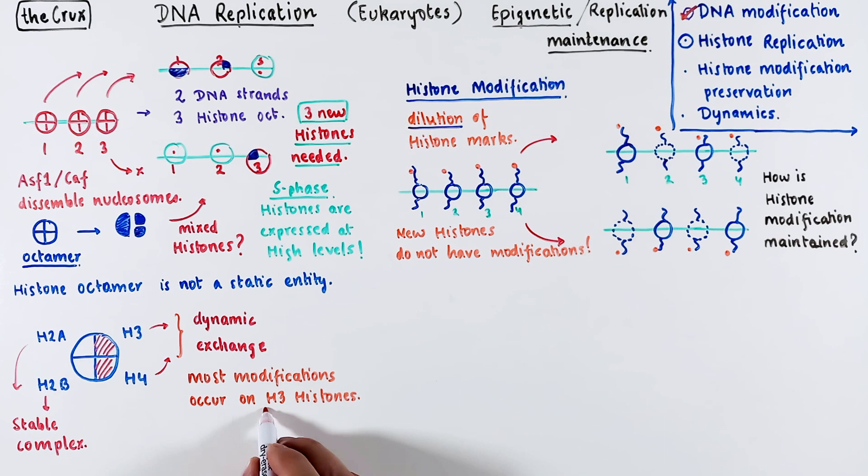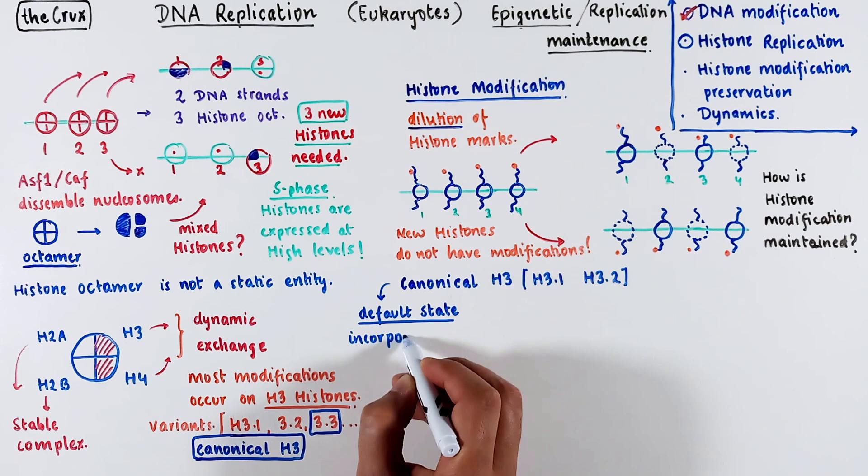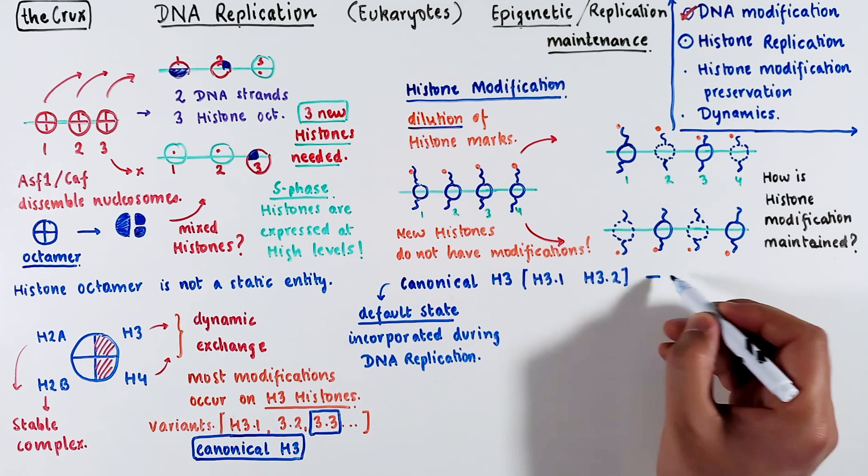And most modifications that occur on histones happen on H3 histones and others on H4 histones. And H3 histones, like H2 histones, have multiple variants, like 3.1, 3.2, 3.3, and even the centromere histones called CENPA. The 3.1 and 3.2 histones are called canonical H3 histones. And others, like H3.3 are non-canonical histones. Let me expand on this canonical part. These are the so-called default H3 histones. This means that during DNA replication, when new H3 histones are installed, it is always the canonical versions.